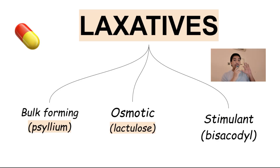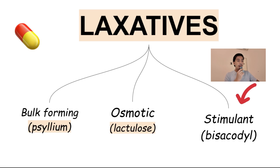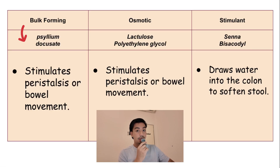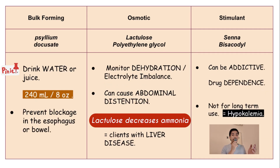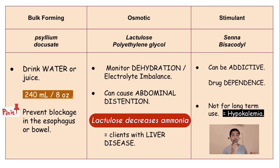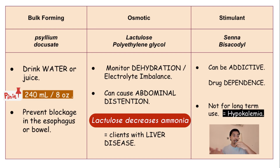Lastly, we have laxatives. We have three types: bulk-forming laxatives, osmotic laxatives, and stimulant laxatives. For bulk-forming, examples are psyllium and docusate. The mode of action is to stimulate peristalsis or bowel movement. Nurses, you have to remember that with bulk-forming laxatives, you must give the patient more water or juice. Because if the drug is blocked in the esophagus, it can cause perforation. That's why we give water to flush out the drug, to prevent perforation in the bowel and esophagus. We give 240 ml or 8 oz of water, or alternatively juice.